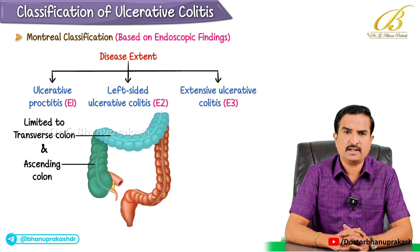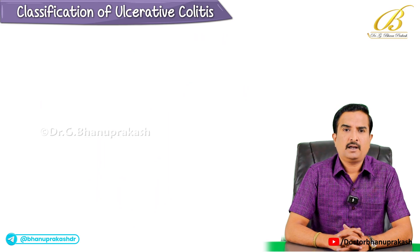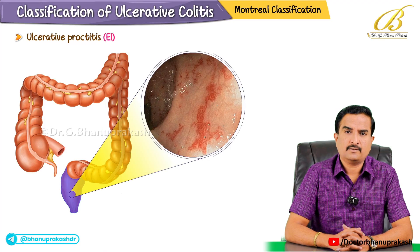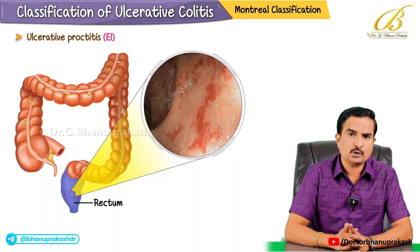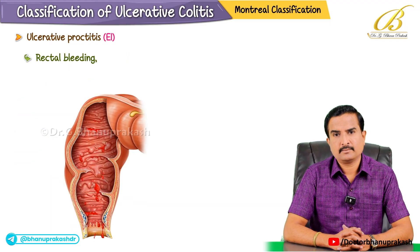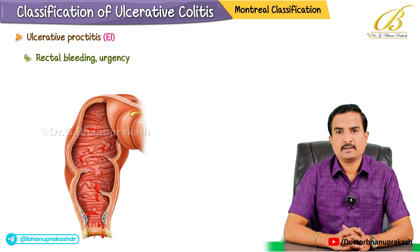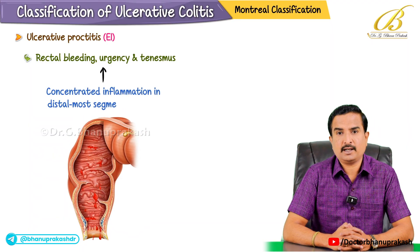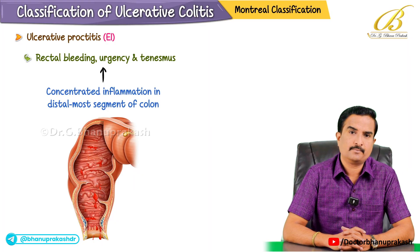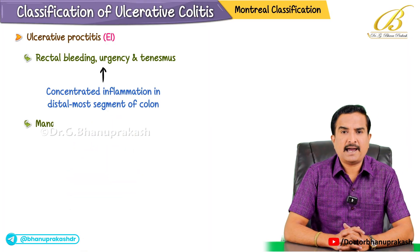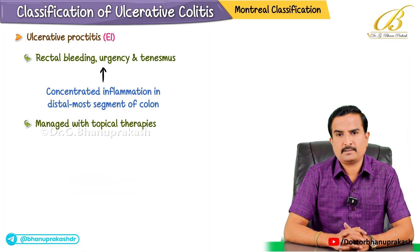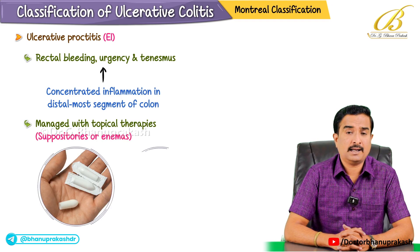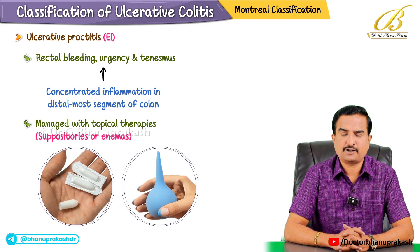Let me discuss each one quickly. In ulcerative proctitis, called E1, the inflammatory process is confined only to the rectum. Patients frequently present with rectal bleeding, urgency, and tenesmus due to concentrated inflammation in the distal-most segment of the colon. This form can often be managed with topical therapies like suppositories or enemas targeting the rectum.